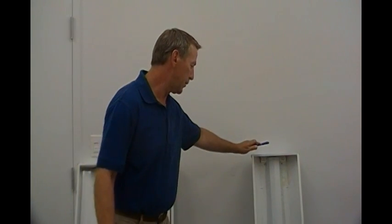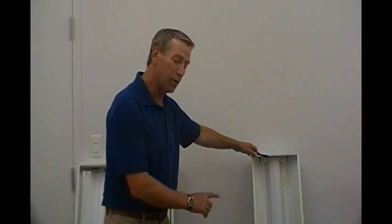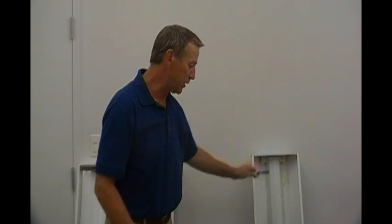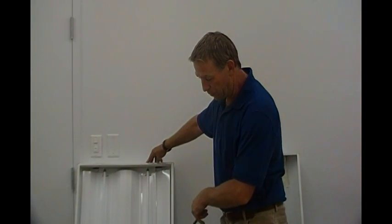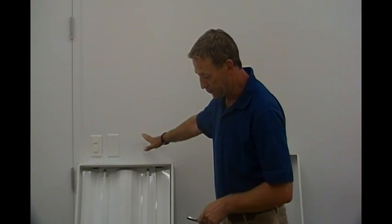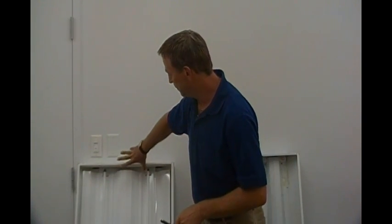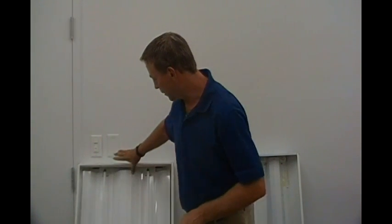Today we're going to demonstrate the recommended procedure for converting a 300 millimeter by 1200 millimeter metric style two lamp fixture, as well as a 600 millimeter by 1200 millimeter recessed fixture. Both of them will be converted to a two lamp 28 watt system.